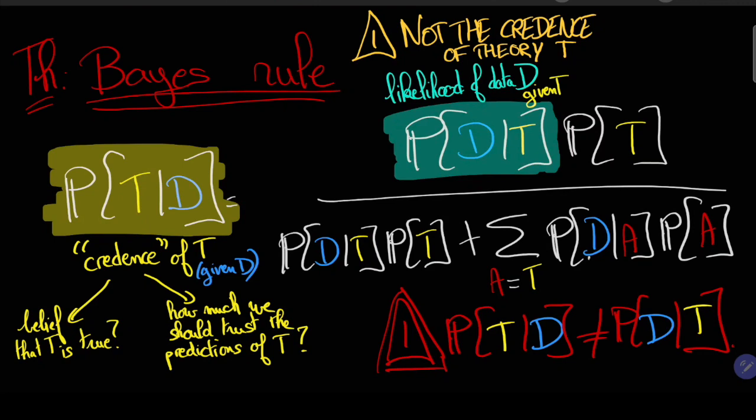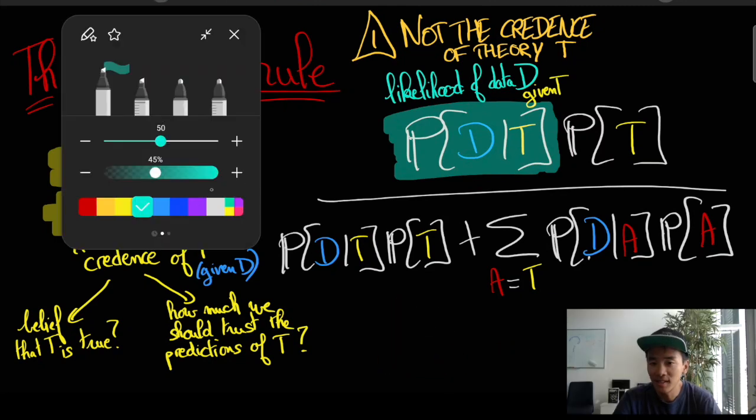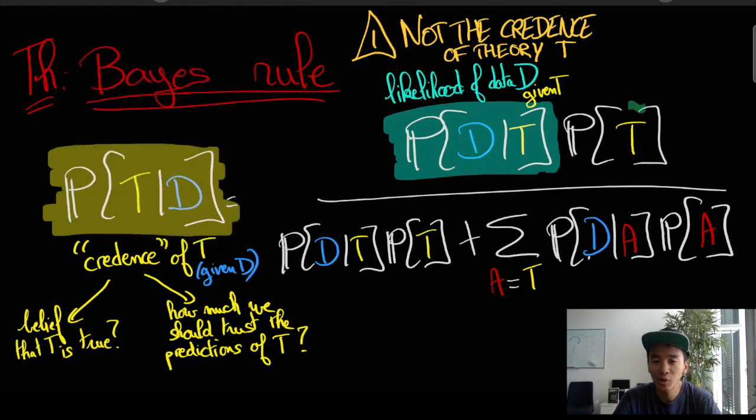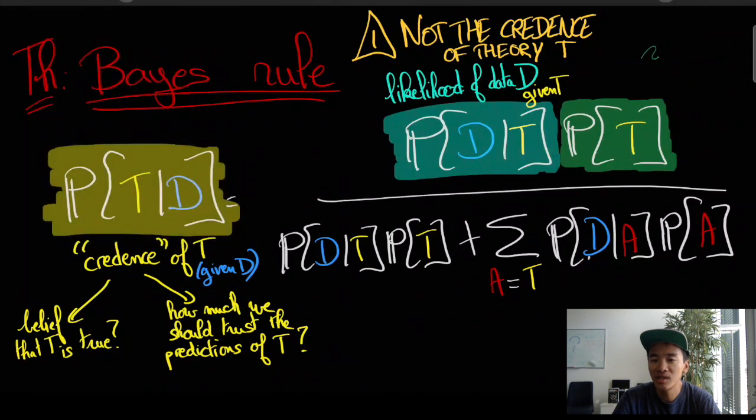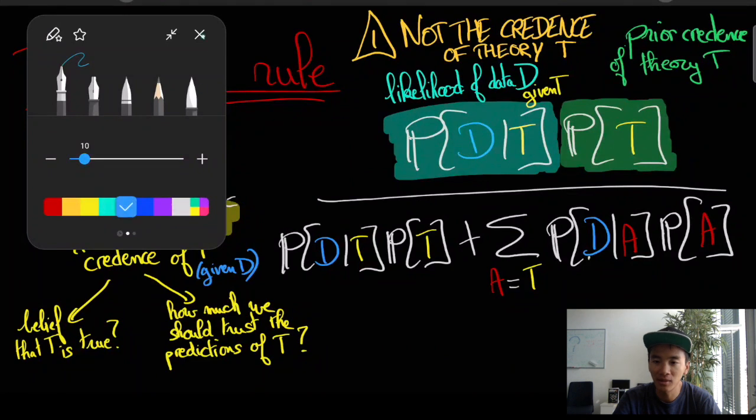And this is because they're doing overfitting and typically it would be because they are overly complex and this complexity of the theories is naturally encoded by Bayes' rule in this other term here which is called the prior probability of the theory or prior credence in the theory T.